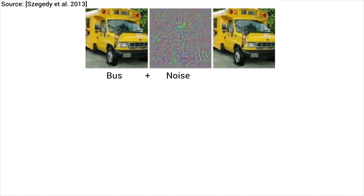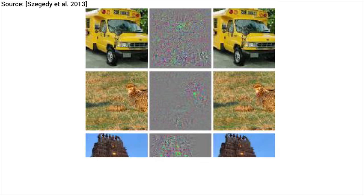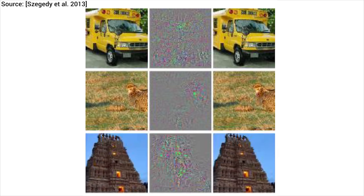But as we discussed in the previous episode, most of these networks have an interesting property where we can add small changes to an input photo and have the network misclassify it to something completely different. A super effective neural network can be reduced to something that is less accurate than a coin flip with a properly crafted adversarial attack.